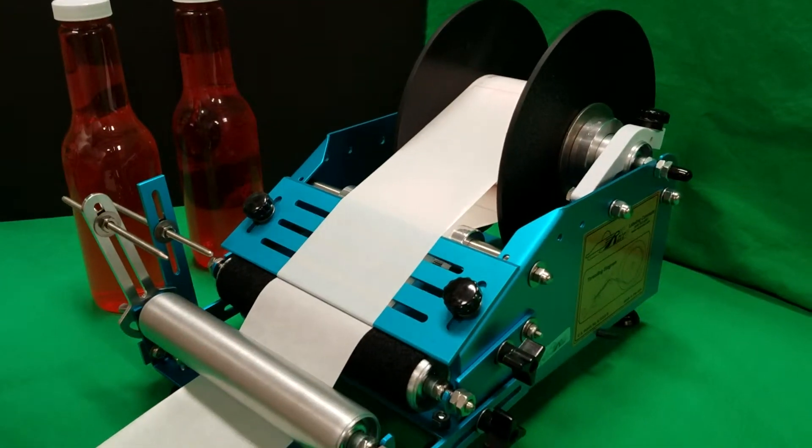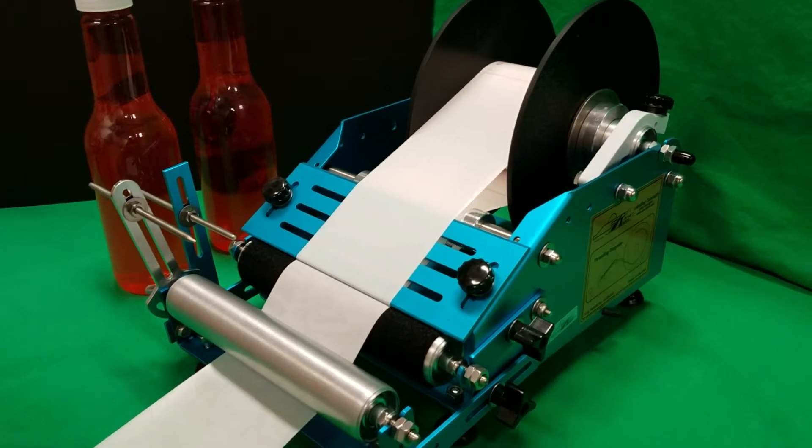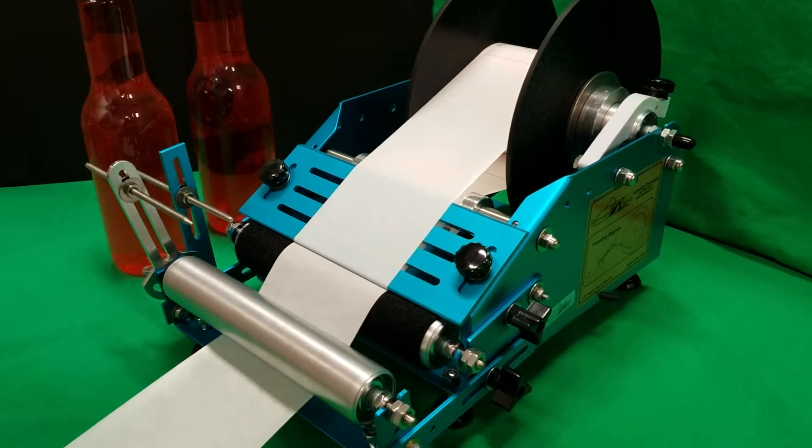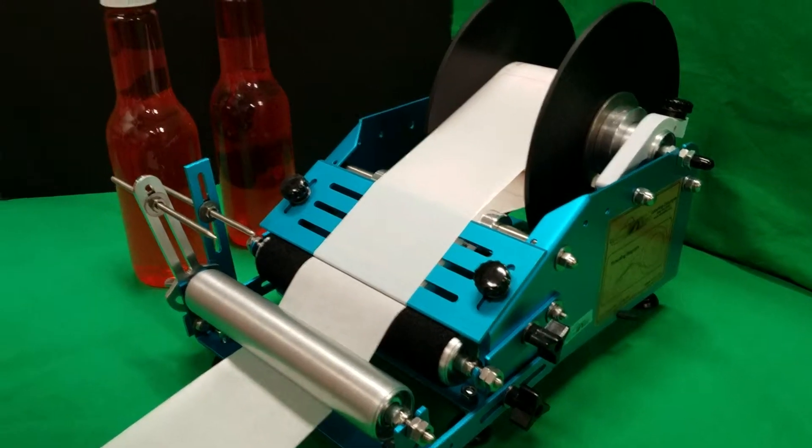This machine is the Race Junior machine and it's equipped with a gap guide which I'm going to demonstrate how to use.